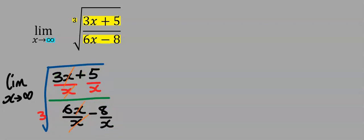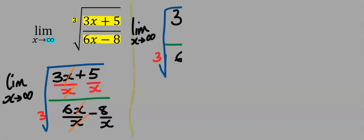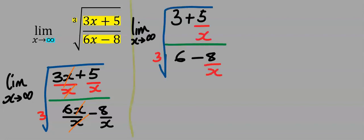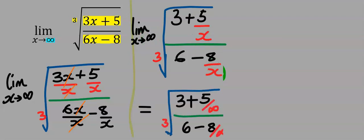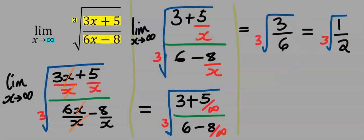Next, this x will cancel out. Then I will take the limit of this function as x tends to infinity — that is, wherever I see x, I will substitute infinity.